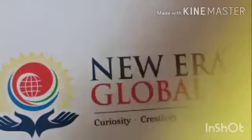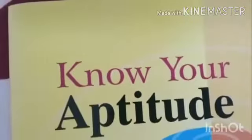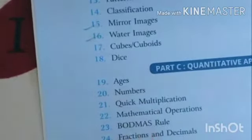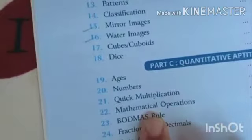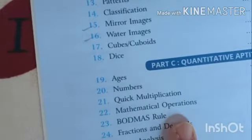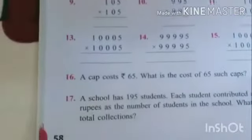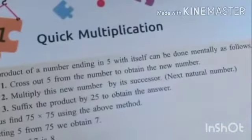So let's move to our textbook. Please be ready with your aptitude book. Today we are going to learn a new chapter, chapter number 21: Quick Multiplication. In our last class we completed mirror image and water images. Now today we are going to do chapter 21 from part C. Please take out page number 58, topic is Quick Multiplication.